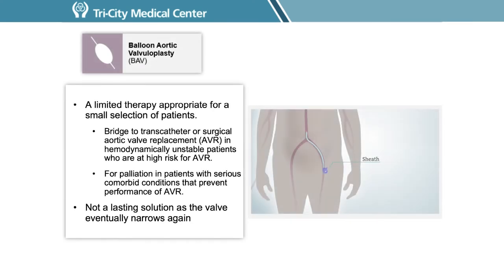Balloon aortic valvuloplasty is a limited therapy appropriate for a small selection of patients. It can be used as a bridge to either surgical or transcatheter aortic valve replacement, and for hemodynamically unstable patients who are at high risk for an aortic valve replacement. It can also be used for palliation in patients with serious comorbid conditions that prevent an aortic valve replacement. It is not a lasting solution — even after the procedure, there is often progression and worsening of the valve, usually within 6 to 12 months. The long-term outcomes resemble the natural history of untreated aortic stenosis. Repeat balloon aortic valvuloplasty can be performed.